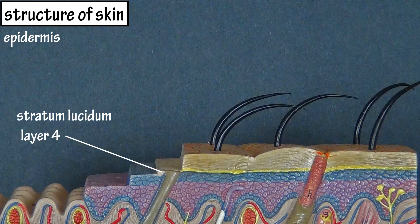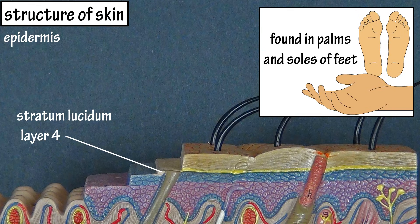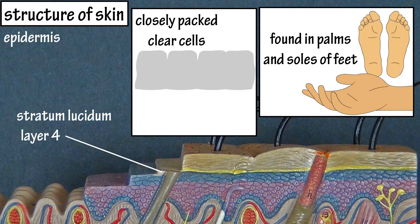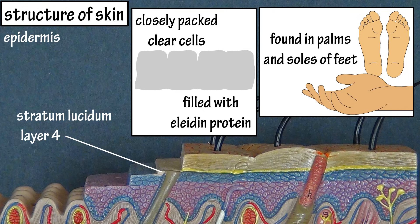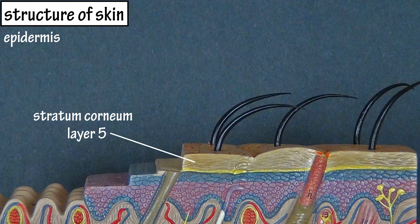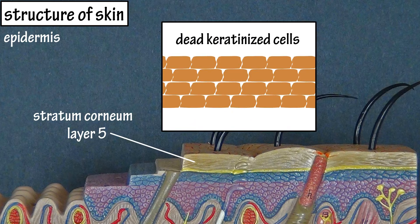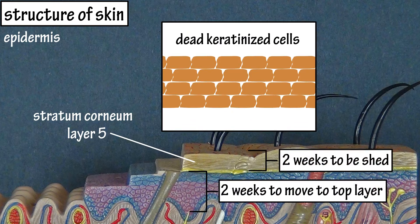The next layer up is the stratum lucidum. This layer is only found in thick skin, in the palms and soles of the feet. The keratinocytes in this layer are clear, flat, closely packed, and have no nucleus or organelles. They are also filled with a protein called eleidin, which is eventually transformed into keratin. The last or top layer is called the stratum corneum. This layer is comprised of dead keratinized cells. It takes about two weeks for a new keratinocyte to reach the stratum corneum, and it remains in this layer for about another two weeks before it is shed.